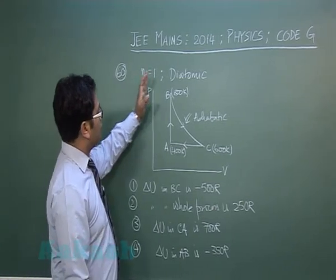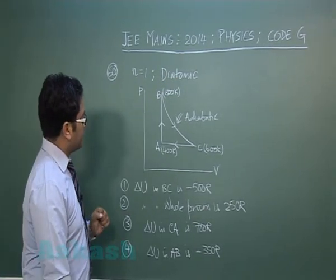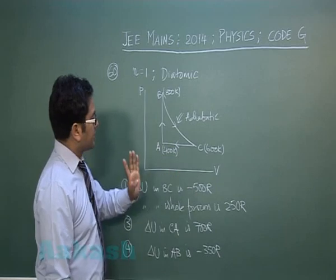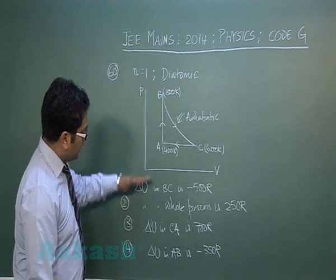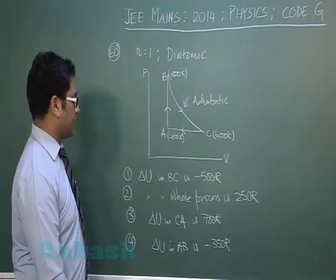It is one mole of an ideal diatomic gas. The cyclic process has been given, temperature specified, and this is adiabatic. We need to calculate the change in internal energy.